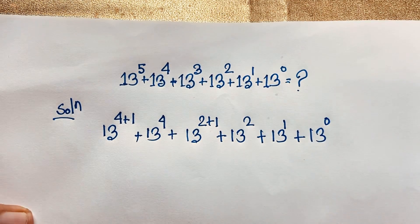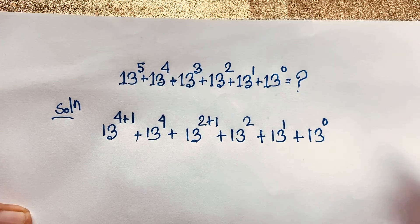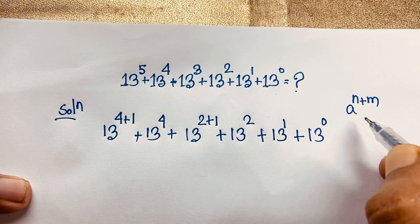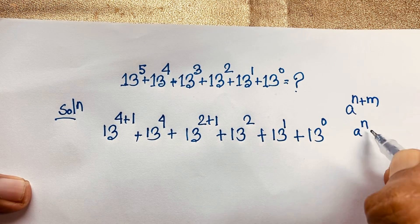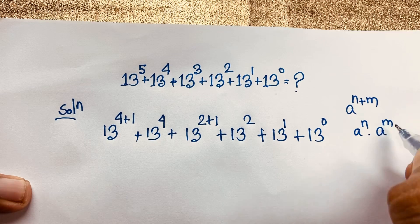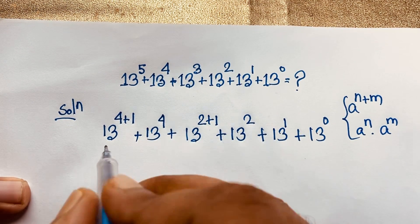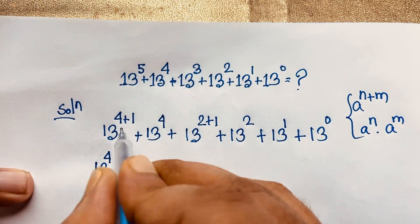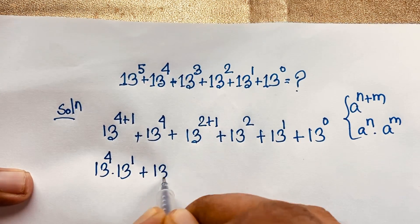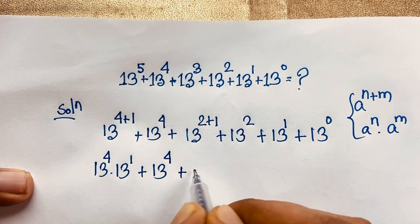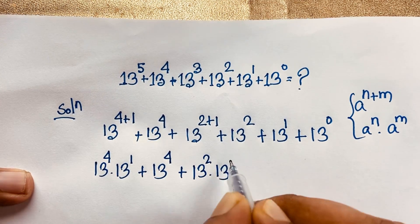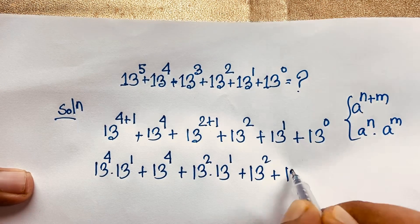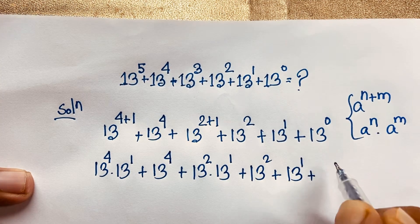Now, according to the exponential formula, we know that a to the power n plus m equals a to the power n times a to the power m. If I apply this math formula here, it will be 13 power 4 times 13 power 1. And this is 13 power 4 times 13 power 1, and this is 13 power 2 plus 13 power 1, and which is 13 power 0.